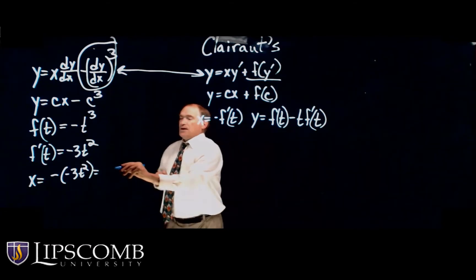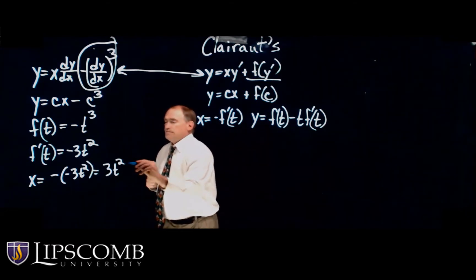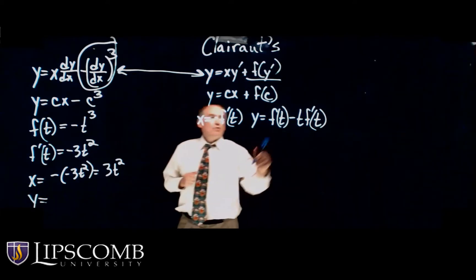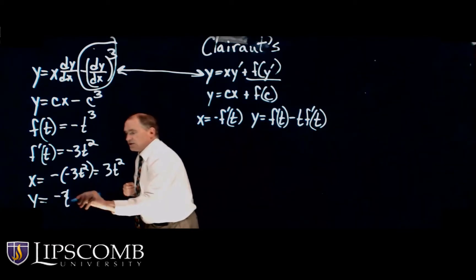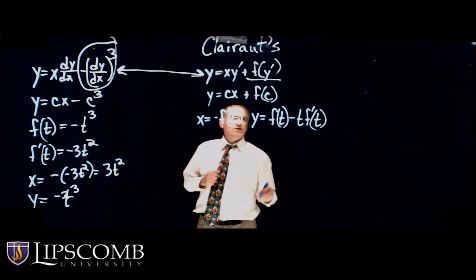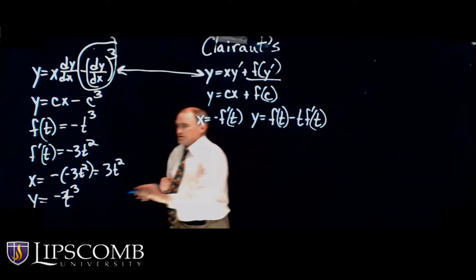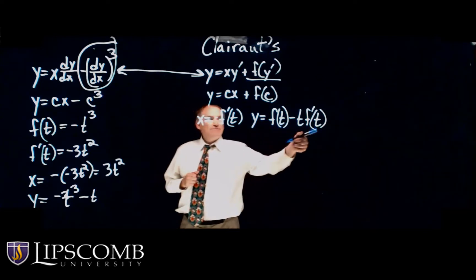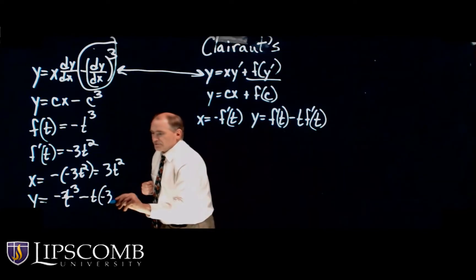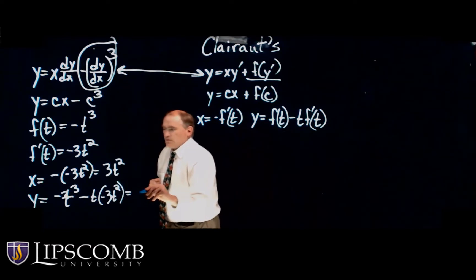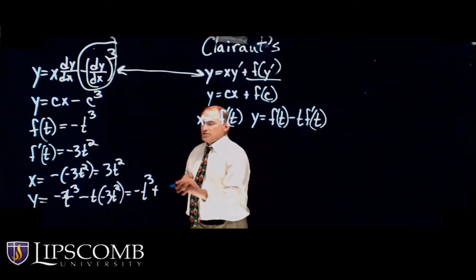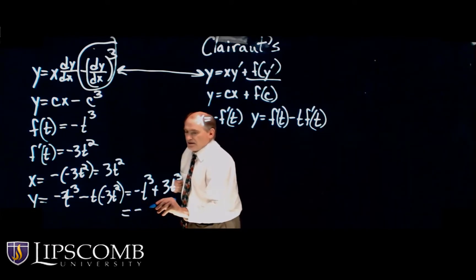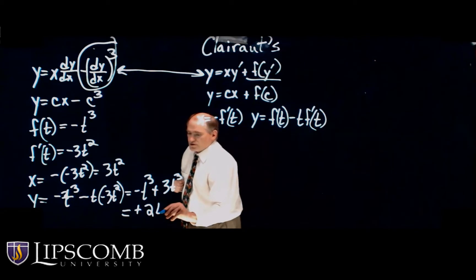Y would be negative T cubed minus T times F prime of T, so that would be negative 3T squared. So that would be negative T cubed minus a minus makes this a plus, 3T cubed. So that would be positive 2T cubed.